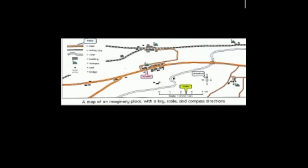Now you can see the left-hand side: road, railway line, river, building, mosque, well, bridge. By the help of this picture, you can easily see where is the road, where is the railway line, where is the river, building, mosque, well, and bridge.